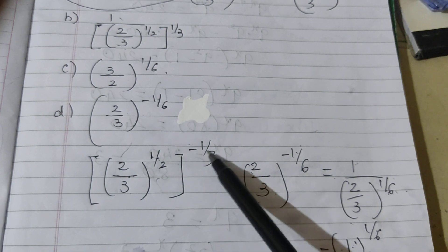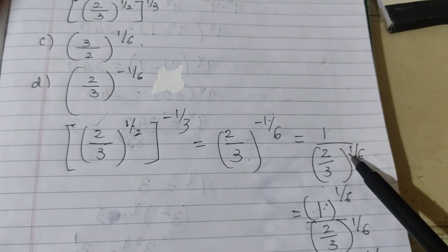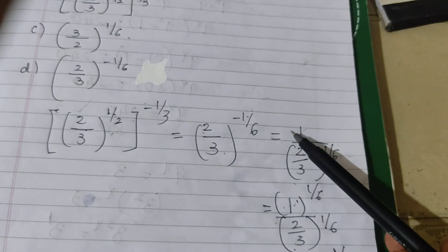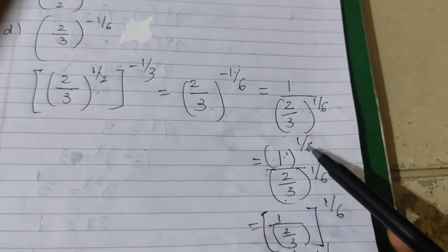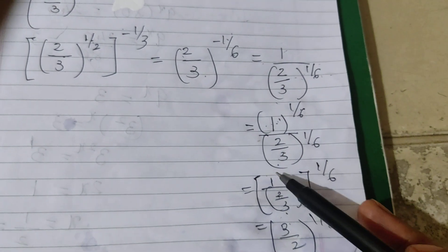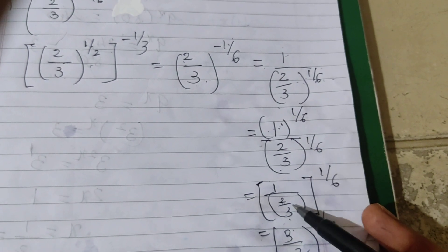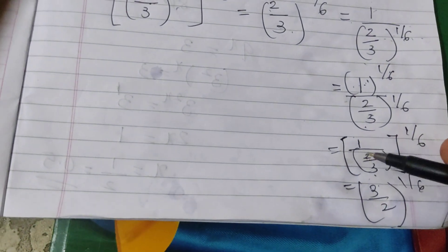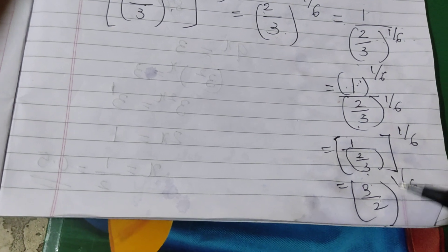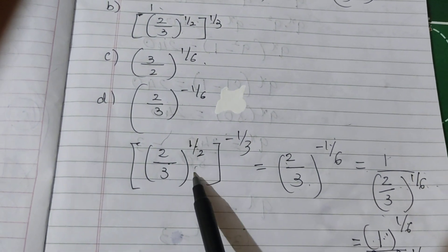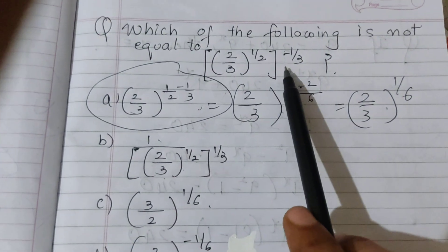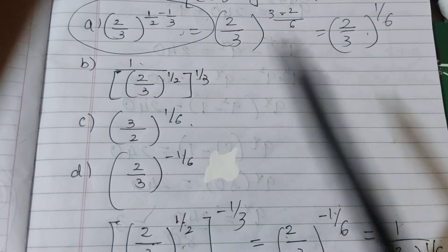To summarize: the powers are multiplied first, then we make the power positive by writing 1 divided by the expression. Since 1 raised to any power is 1, the numerator stays 1. Since the power 1/6 is the same for numerator and denominator, we write it as (1/(2/3))^(1/6) = (3/2)^(1/6). So B, C, and D are all equal to the original. Hope it is clear.